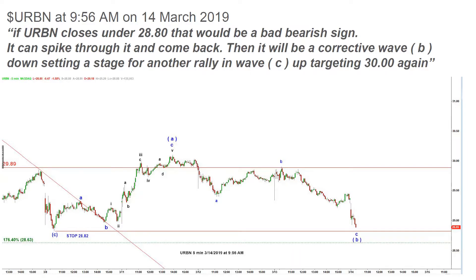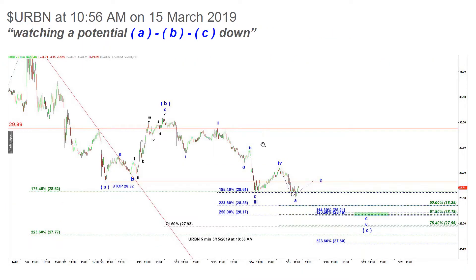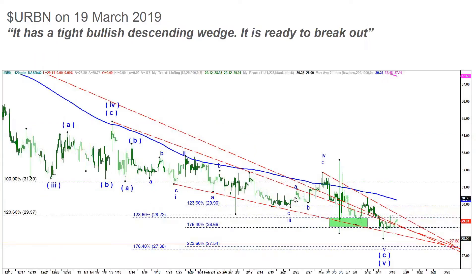It can spike through and come back — then it will be a corrective wave B down, setting the stage for another rally in wave C up targeting $30 again. What we got was price dipping under $28.80, first landing at $28.50, then a sharp corrective move up, then dipping back down under $28.80. But it did not close under $28.80 — it was just a shakeout to make people sell their holdings.